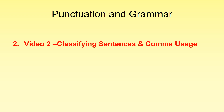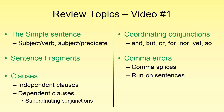First, let's take a look at some of the topics we covered in video number one. If you are unsure of any of these topics, make sure you go back and review that video. We covered the simple sentence, sentence fragments — make sure you understand the difference between a complete sentence and a sentence fragment. We also looked at clauses, those building blocks of the sentence — independent clauses and dependent clauses. We looked at coordinating conjunctions: and, but, or, for, nor, yet, so. And we looked at some common comma errors: comma splices and run-on sentences.